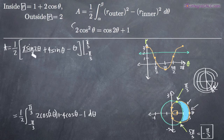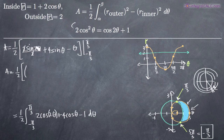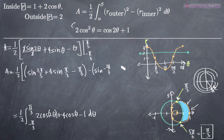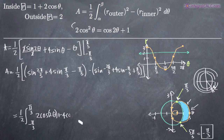We cancel the 2's and plug in our upper and lower limits of integration. Plugging in the upper limit first, we get sin of 2 times pi over 3, which is sin of 2 pi over 3, plus 4 sin of pi over 3, minus pi over 3. Then minus the result from the lower limit, where minus negative pi over 3 becomes plus pi over 3.